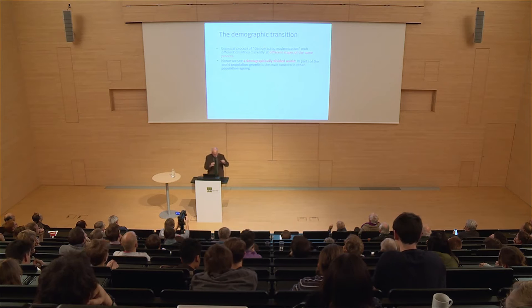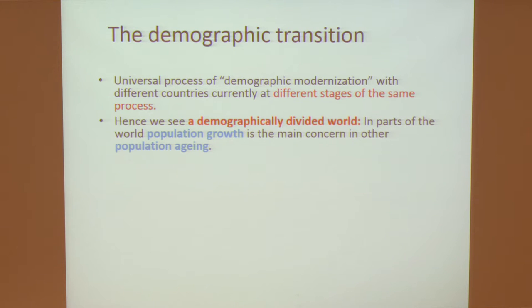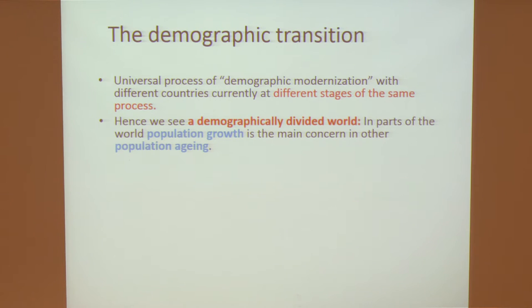Why are we relatively certain that world population growth will sooner or later come to an end? There is the theoretical construct of the universal process of demographic modernization — the demographic transition — where populations in different parts of the world are at different stages of the same process. In a way, Africa is going through a very similar process to what Central Europe went through in the late 19th and early 20th century, and then some East Asian countries went through in the mid-20th century. It's the same process of first declining death rates and then declining birth rates. Since the timing is not the same, we today live in a demographically divided world.